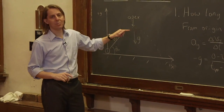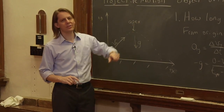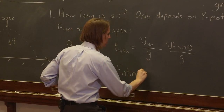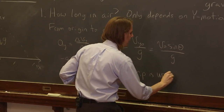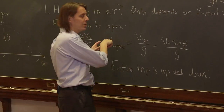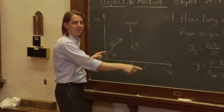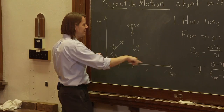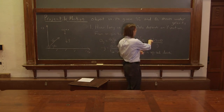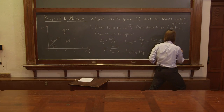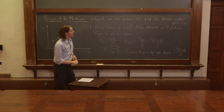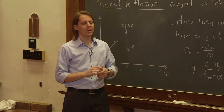That's the time to get to the top, but we asked how long it's in the air for the entire trip. Since the path is symmetric — starting and ending at the same height — the apex is only halfway. So the total time is two times t_apex, which gives us two times v-naught sine theta over g. That's the first thing we've learned: how long it's in the air. Now we're going to answer two more questions.